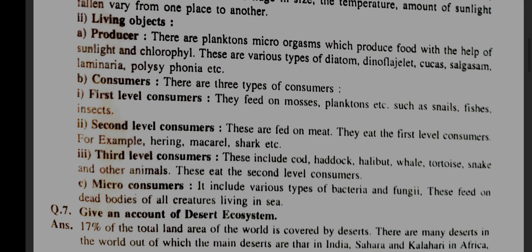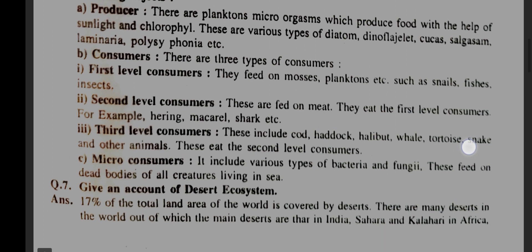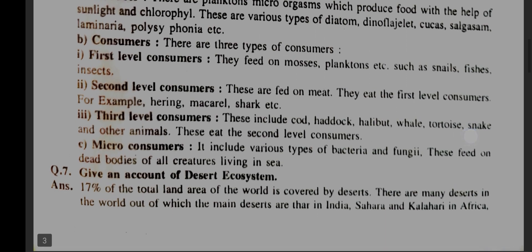1. First level consumers: they feed on mosses, phytoplanktons, etc. Such as snails, fishes, and insects.